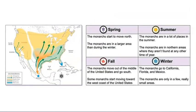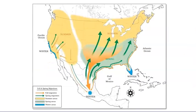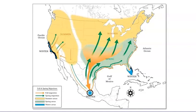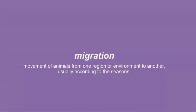How would you describe the monarch butterflies' movements through all four seasons? I would say that monarch butterflies go south to warmer places during the winter. They go north during the spring and summer, and then they start moving south again during the fall. I also noticed that the monarchs go from being in a lot of places during the summer to a smaller area in the fall, then into an even smaller area in the winter before they spread out again in the spring. Scientists have a word for this type of movement: it's migration. Migration is the movement of animals from one region or environment to another, usually according to the seasons.